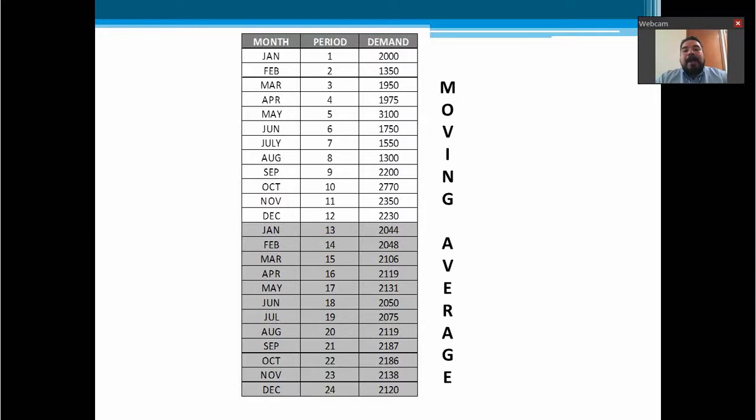The part of the chart in gray is the part of the moving average analysis. So if we see the analysis for January of 2017, the 13th month of the analysis, these 2,044 units of demand are calculated by taking the average of the 12 months before January 2017. So 2,044 is the average of all these quantities right here.